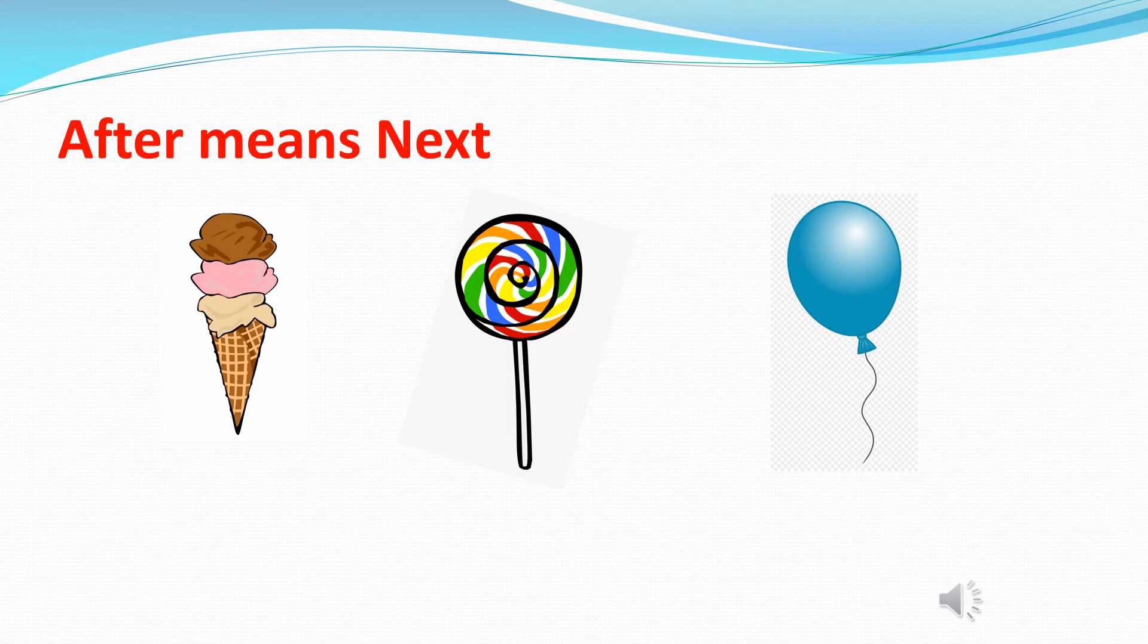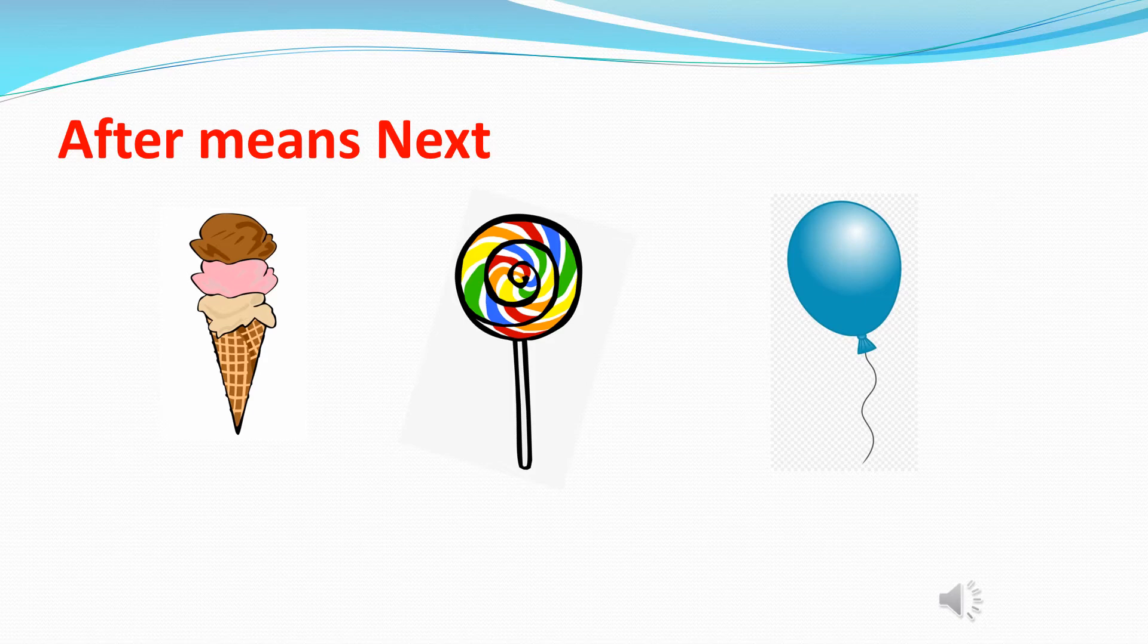Over here you can see an ice cream, a lollipop and a balloon. So can you see this arrow? This arrow says what is going to come next. So over here after the ice cream is the lollipop and after the lollipop is the balloon.